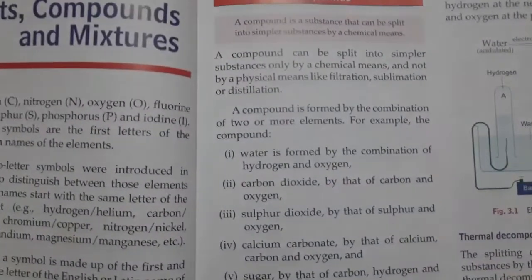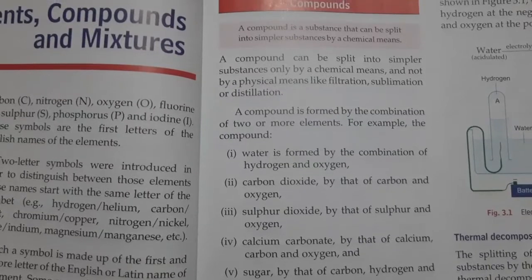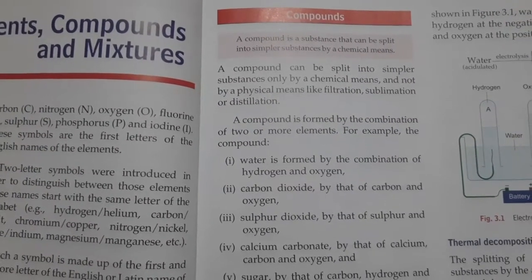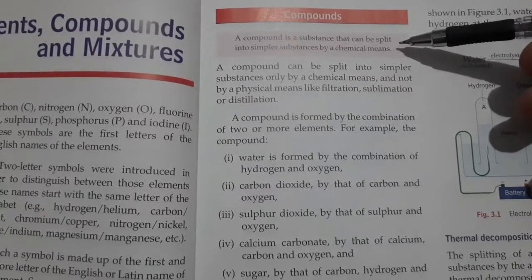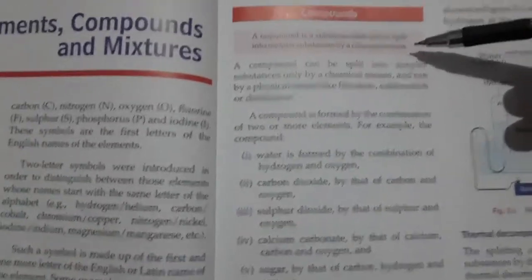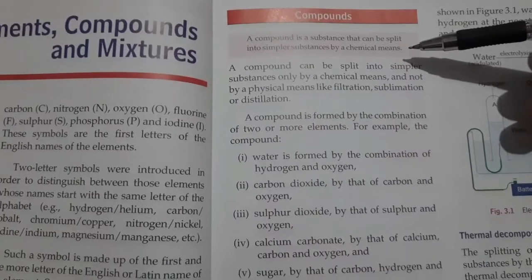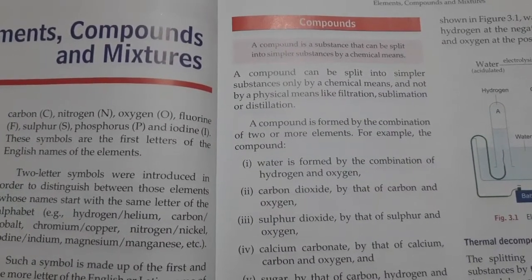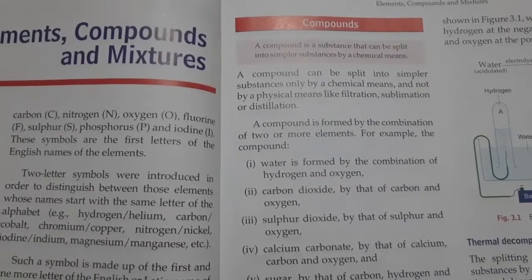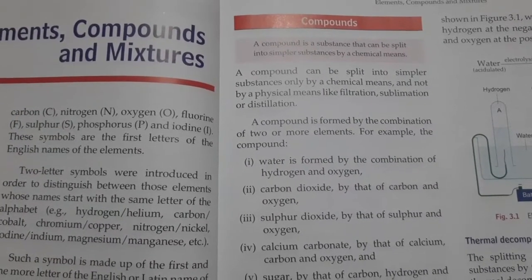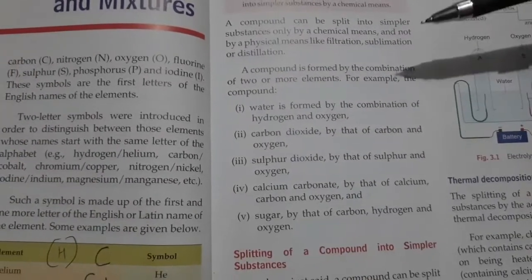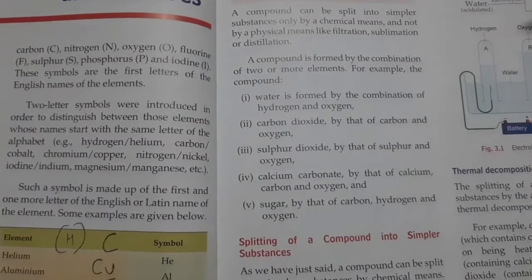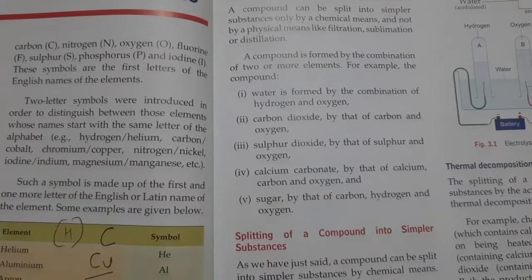Now we will discuss what compounds are. Compounds are substances in which at least two or more elements combine, and they can be split by chemical means. In some compounds it is not so easy to split them, but generally we can split compounds into simpler substances by chemical means. For example, water is formed by the combination of hydrogen and oxygen.